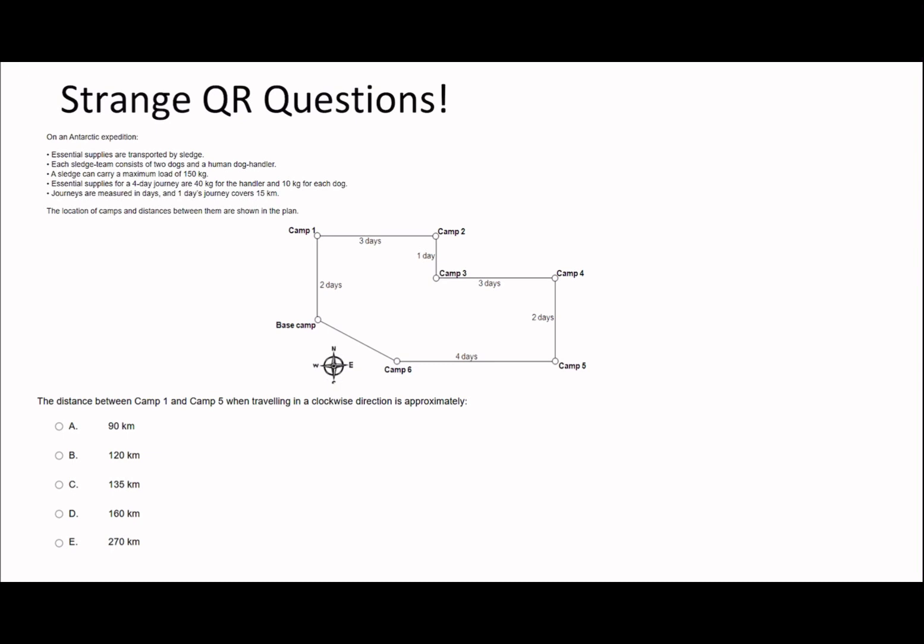The distance between camp 1 and camp 5 when traveling in a clockwise direction is approximately. So clockwise direction means we follow this kind of pursuit. And if we have a look here, I'm trying to look for something to do with linking days to time. It says journeys are measured in days. One day's journey covers 15 kilometers. So you go 3 days plus 1, 4, plus 7, plus 3 is 7, plus 2 is 9 days. So 9 days, and it says 1 day is 15 kilometers. So 9 days times 15 kilometers per day is going to equal 135 kilometers. So this wasn't necessarily too bad. It was just about specifically looking at the information that they've given us. So the answer here is 135 kilometers.